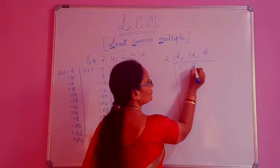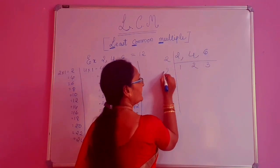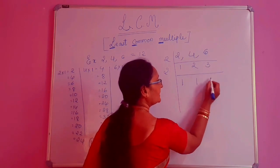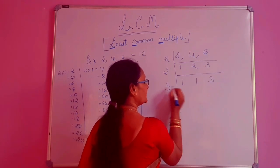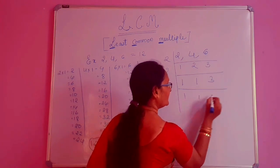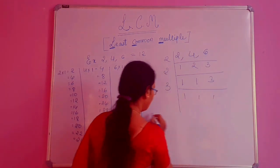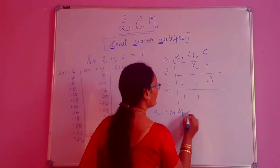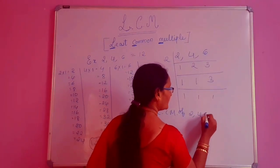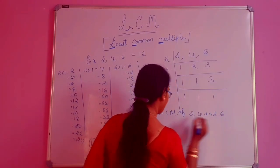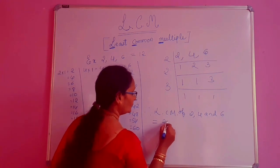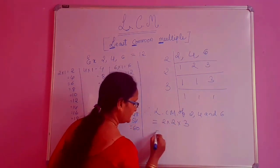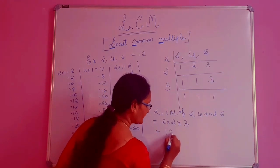Now let us find out the LCM of these three numbers by prime factorization method. 2 ones are 2, 2 twos are 4, 2 threes are 6. Again we take 2 ones are 2, 2 ones are 2, 3 as it is. Now we take 3, 1, 1 — ones are. Therefore LCM of 2, 4 and 6 is 2 into 2 into 3. That is, 2 twos are 4, and 4 threes are 12.